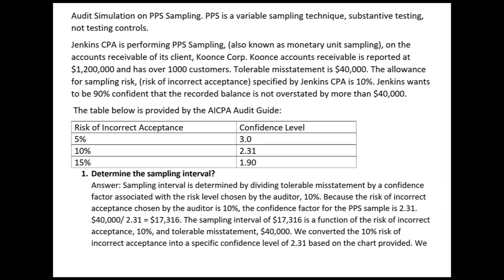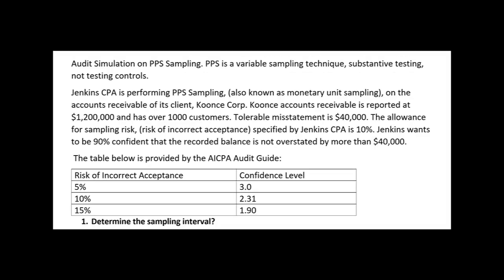When the fear is overstatement and the auditor expects a low error rate, PPS sampling is often the technique of choice. Jenkins CPA is performing PPS sampling — also known as monetary unit sampling, interchangeable terms on the CPA exam — on the accounts receivable of its client Kuntz Corp. Kuntz's accounts receivable is reported at $1.2 million, and they have over a thousand customers.